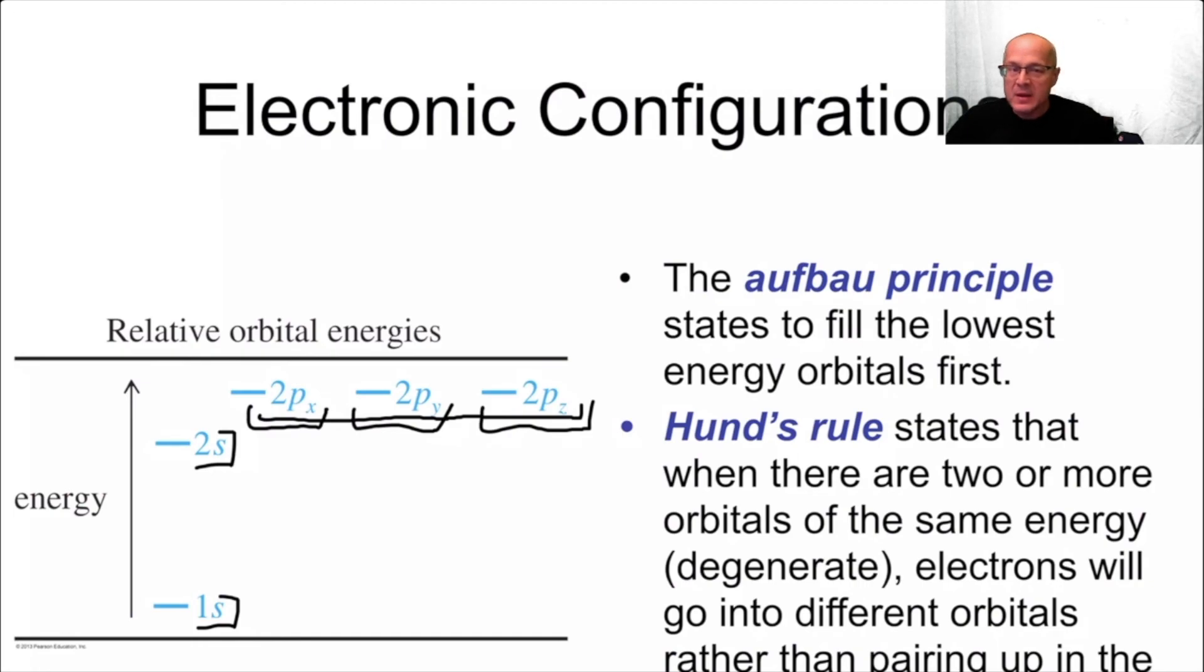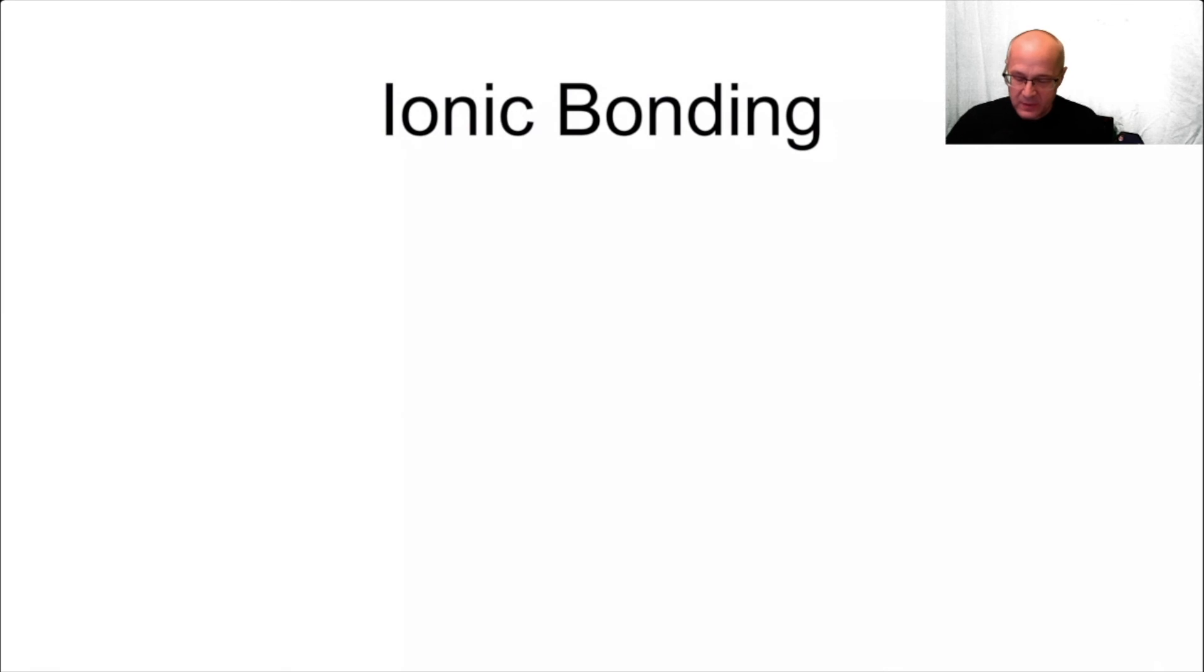Aufbau says that you fill the lowest energy orbitals first. Electrons always want to go close to the nucleus if they can because that's where the protons are. That's where the attraction is. Hund's rule states that when two or more orbitals have the same energy, electrons will go into different orbitals rather than pairing up. Electrons will not want to pair until they absolutely have to. And that's just how it goes. So remember that from general chemistry. Electrons will not pair until they absolutely have to.